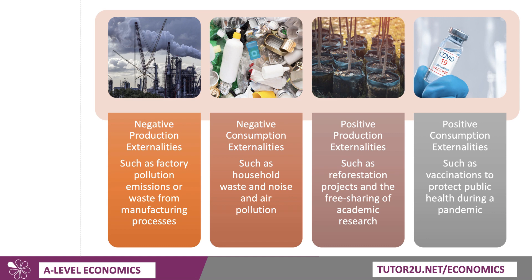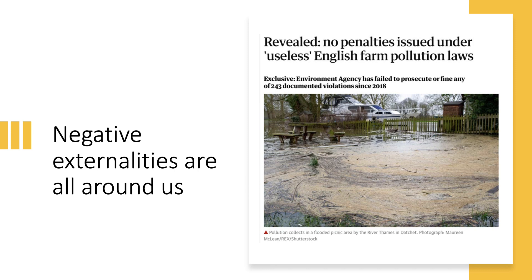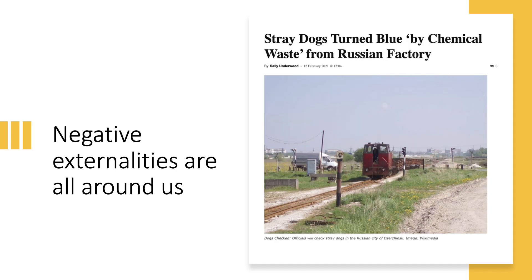So in this video, let's work through together the key negative production externalities diagram. Externalities are all around us. A very topical issue has been the sheer volume — thousands and thousands — of raw sewage emissions from our antiquated sewage system. Water utilities are under huge pressure due to the immense quantity of raw sewage being emitted into rivers, tributaries and bathing areas. And here's a great example: in a Russian city in 2021, stray dogs turned blue from chemical waste from a factory. Negative externalities are all around us.